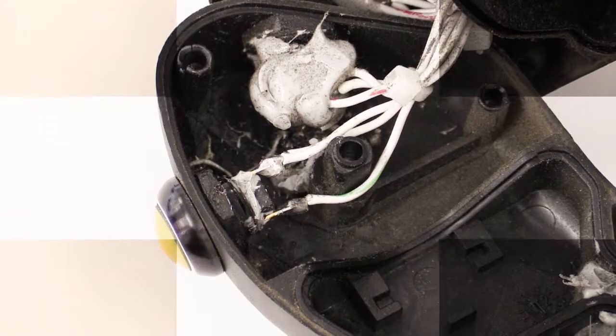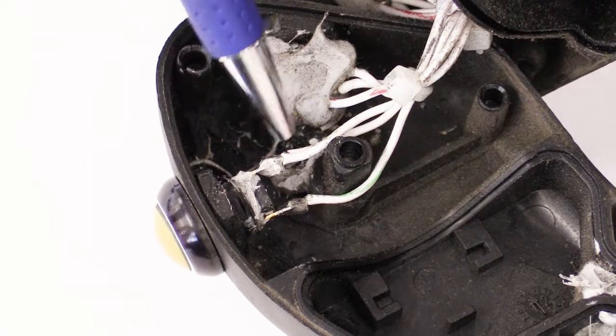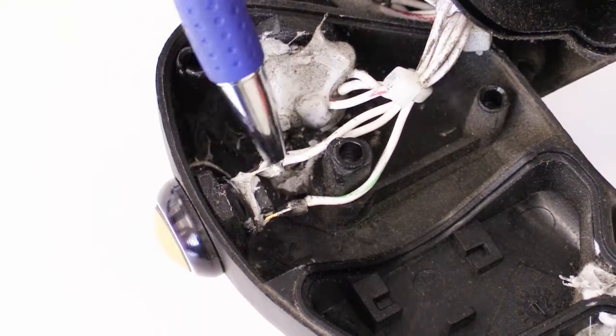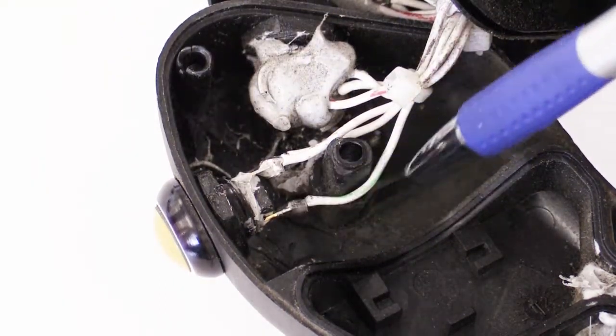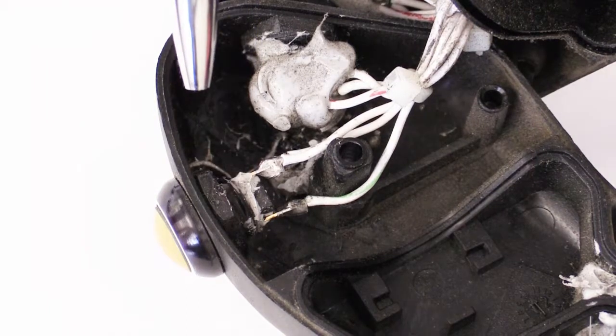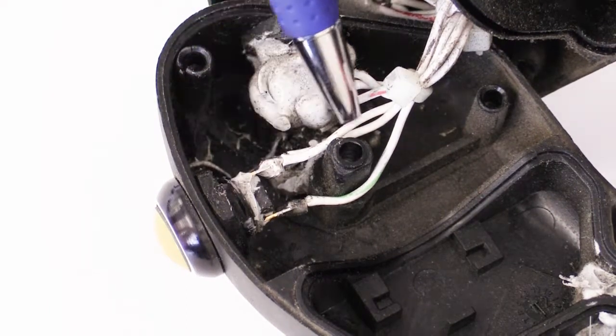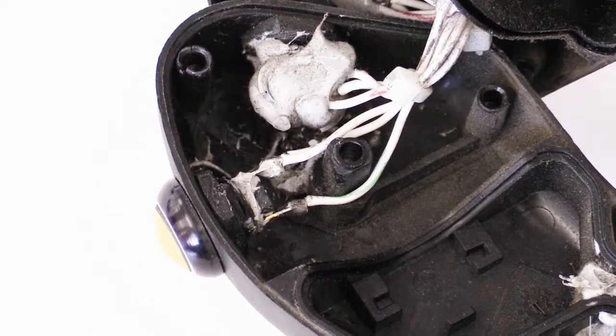Once you're at the point of removing the function switch, please note that on one side of the switch there are two wires and on the other side there is one. While the switch is not polarity sensitive, you want to ensure that the two wires stay together on the one side of the switch.